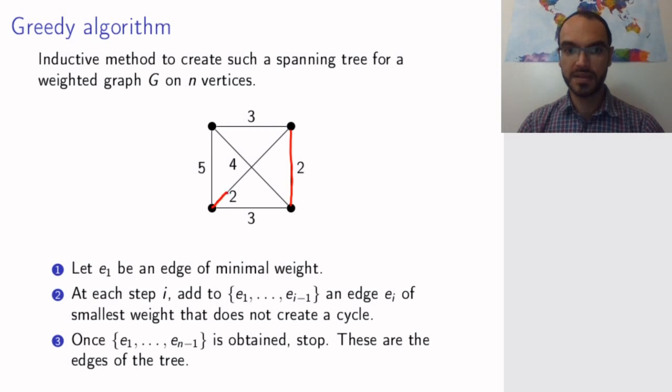So I created this spanning tree. By the way, it will automatically be connected because it is a graph of n minus one edges and n vertices, and it doesn't have cycles, so therefore it is a tree and it is connected. And then I stop. So this algorithm works in general.